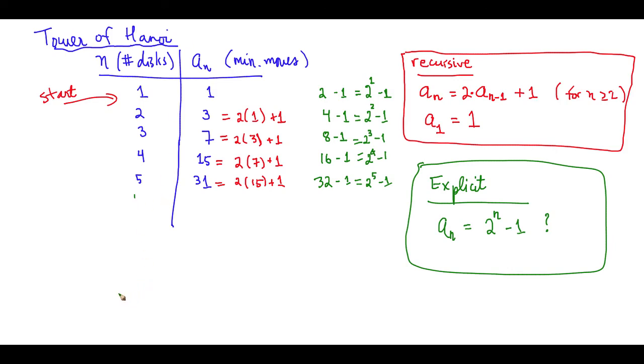So we think that this is true, but we don't know, right? So maybe at like n equals 50, the explicit formula will suddenly be different. We don't quite know that for sure right now. So we're going to need some way in order to prove that such a claim is true.